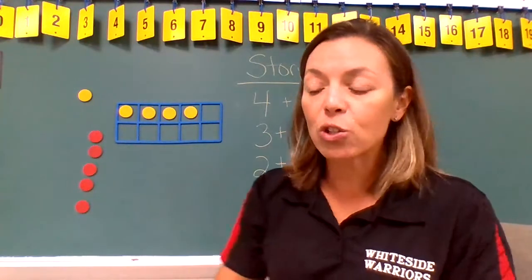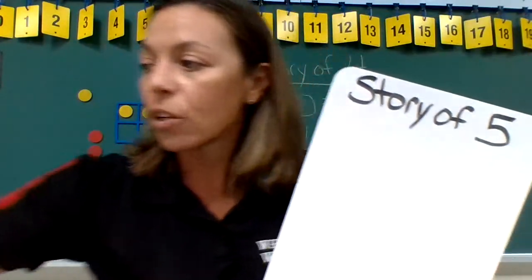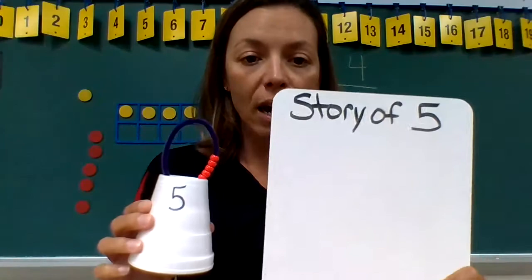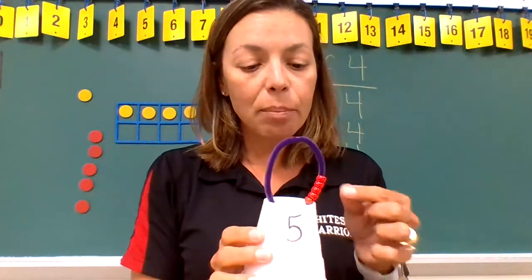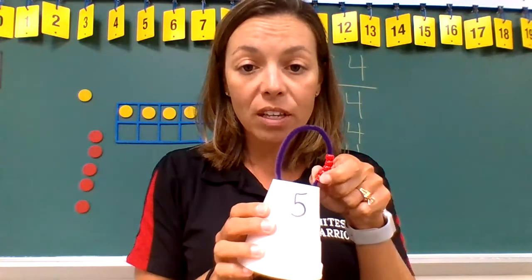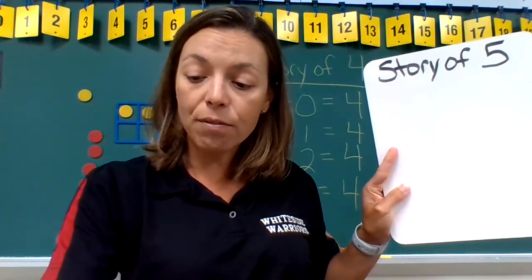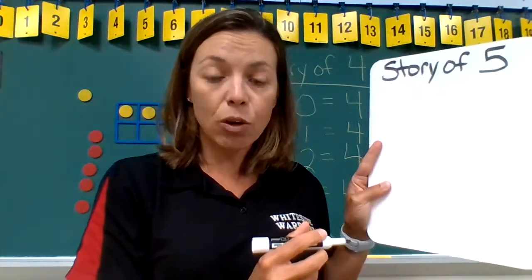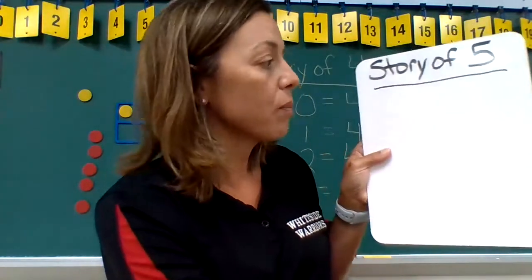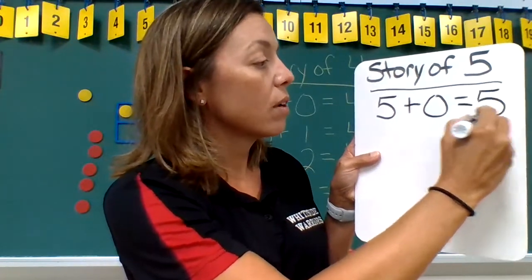Next we're going to talk about the story of five and ways to make five. To do that we're going to be looking at a little cup with some beads on it. Right now you can see on this side of the cup we have one, two, three, four, five beads. So on your paper we're going to start our story of five. If you need to pause the video to take your notes, you can do that. We have five beads on one side, zero beads on the other. That gives us five plus zero equals five.